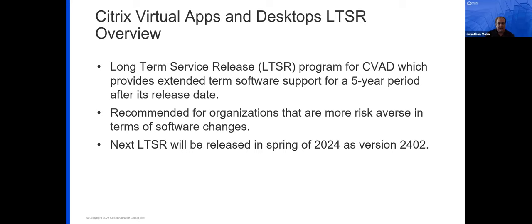LTSR does include updates with bug fixes and security updates, and Citrix releases cumulative updates every four to six months or so. A new LTSR is released every 18 to 36 months. With this Virtual Apps and Desktops LTSR, there will also be an LTSR for Workspace App for Windows — that support timeline is three years, with a maintenance window of about 15 to 18 months.